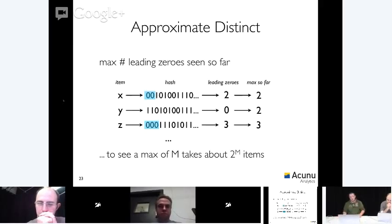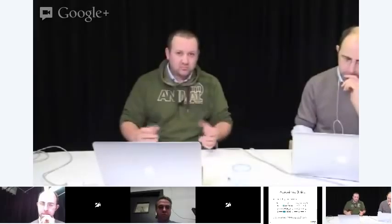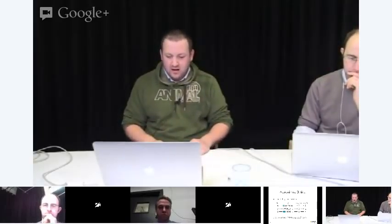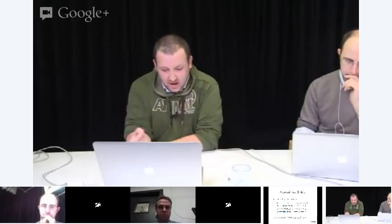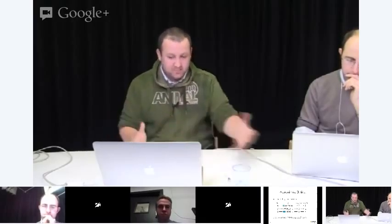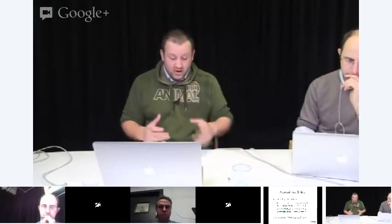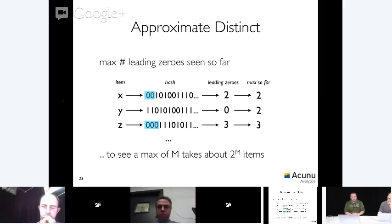Now if you flip that around, if I've seen three leading zeros, then on average I'm going to have seen eight distinct items, two to the three distinct items. So there's your way of doing approximate analytics. Hash and keep track of the maximum number of leading zeros. It doesn't have to be zero, right? It could be leading ones or any leading pattern, but we just do leading zeros for simplicity. So this is great. With a very small amount of space and very easy to update, I said previously we can do maximal counters very easily. We can now keep track of the approximate number of distinct items in a stream.